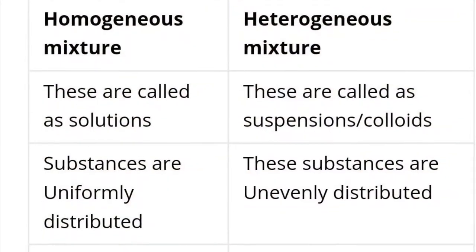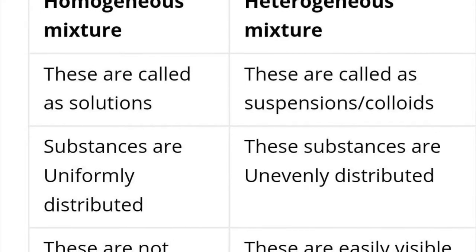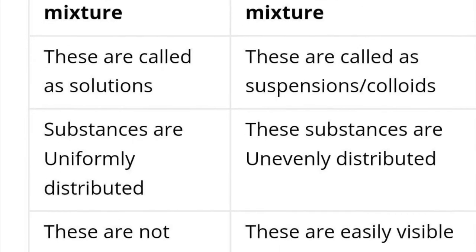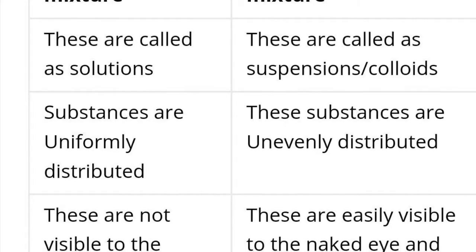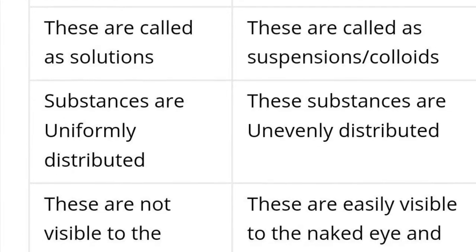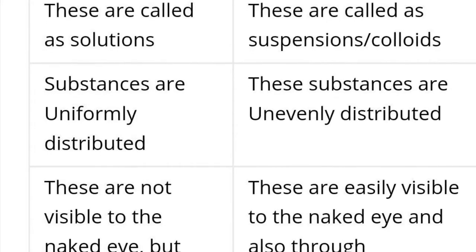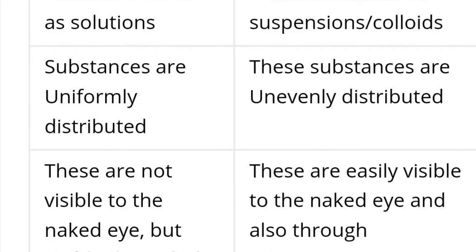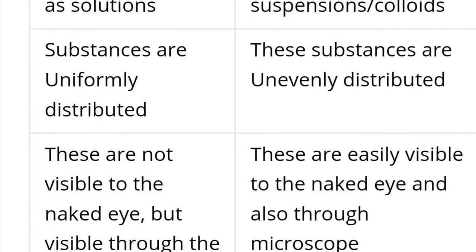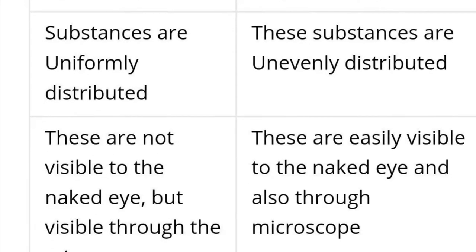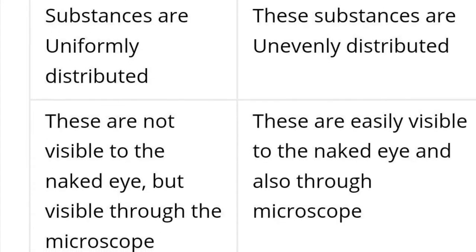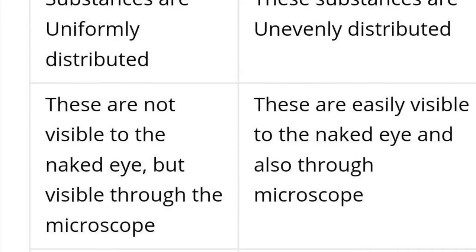Impure substances are classified into homogeneous mixtures and heterogeneous mixtures. 'Homo' means uniform. In a homogeneous mixture, the particles are uniform throughout the mixture in composition. In a heterogeneous mixture, it is not uniform throughout the mixture. Homogeneous mixtures are difficult to separate by physical methods like filtration, whereas heterogeneous mixtures are easy to separate by filtration.